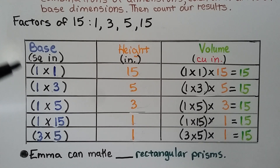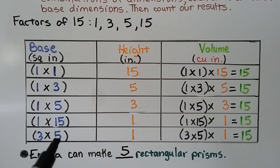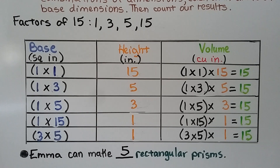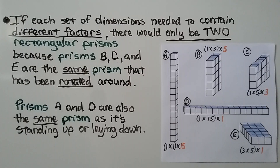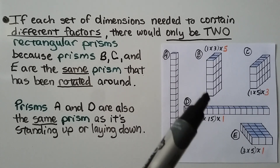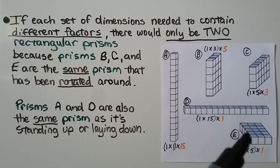We count them: 1, 2, 3, 4, 5. Emma can make 5 rectangular prisms, and each of their bases will be a different size. Note that 5×3 for the length and width was not listed separately, because it would still be the same size base of 15. Some prisms are actually the same prism rotated — for example, a 5×3 width base is the same as a 3×5 base that has been flipped or laid down.